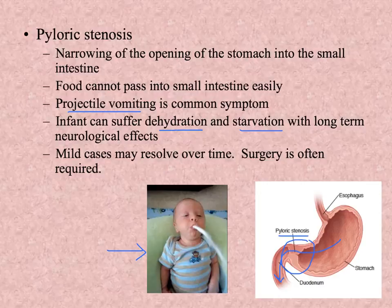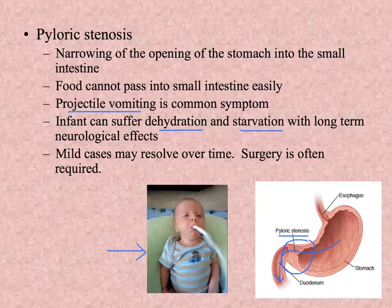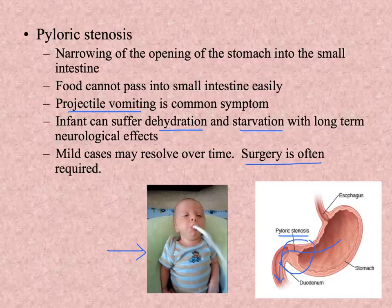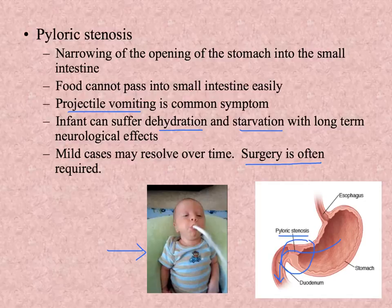If a baby is starving as an infant, there are long-term neurological effects because the brain is very busily developing in those first two years. If there aren't enough nutrients to supply brain growth and development, the person won't reach their full intellectual capacity. Pyloric stenosis might be mild enough to resolve over time, but often children have surgery to remove some of that excess muscle so that the space is large enough for food to pass into the small intestine.